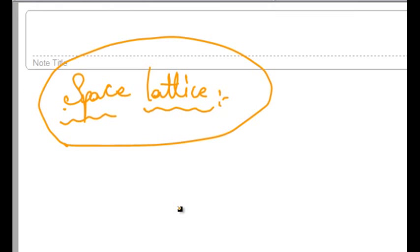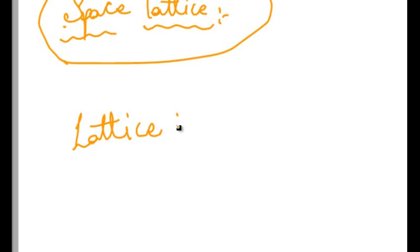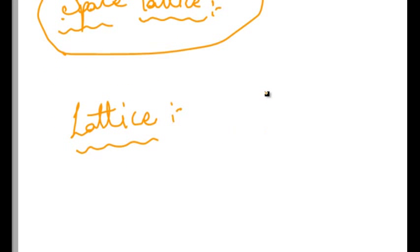To first know about Space Lattice, we need to know about what is a Lattice. Lattice can be defined as a mesh in which atoms or ions can be arranged in a regular pattern inside a crystal.